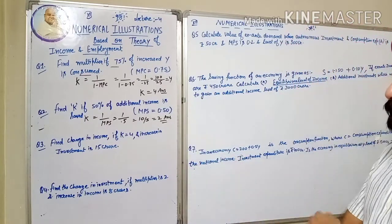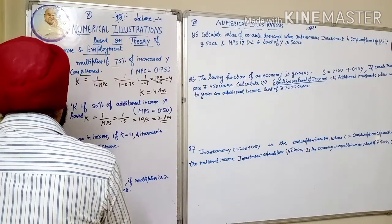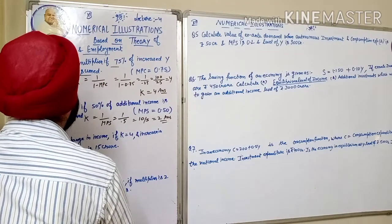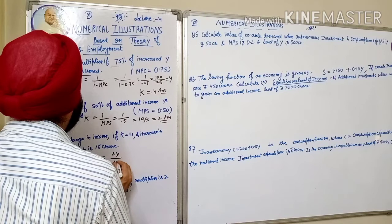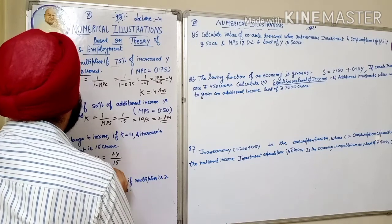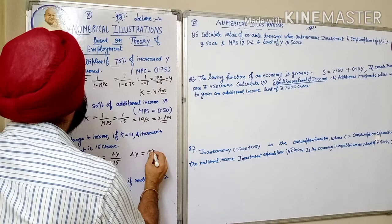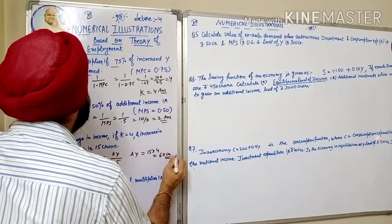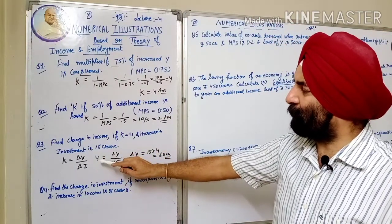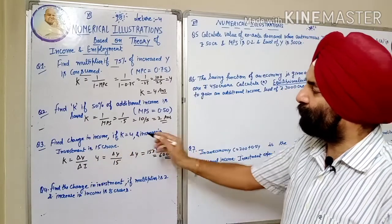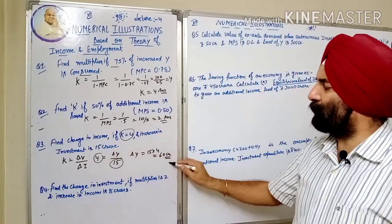अगला: Find the change in income. पहले formula लिखेंगे: K is equal to change in income upon change in investment. K = 4 है, change in investment = 15 करोड़। Change in income is equal to 15 into 4 = 60 करोड़। K की value already 4 दी हुई है, increase in investment भी दिया हुआ है, so income = 60 करोड़।